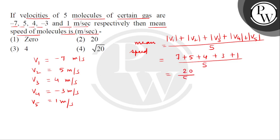We will get 20 divided by 5, which is 4 meter per second. So the correct answer is option number 3. Thank you.